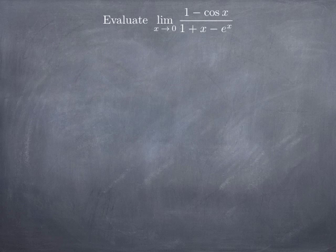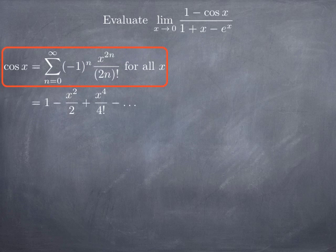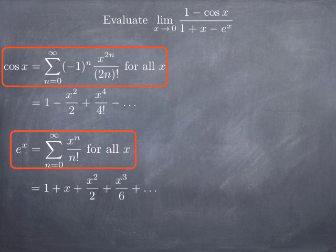The third example: evaluate the limit as x goes to 0 of (1 minus cos(x)) divided by (1 + x minus eˣ). As x goes to 0, cos(x) goes to 1 so the top goes to 0, and eˣ goes to e⁰ = 1 so the bottom also goes to 0. We use the power series for cos(x): 1 minus x²/2 + x⁴/4! minus x⁶/6! and so on, and for eˣ: 1 + x + x²/2 + x³/6 + x⁴/4! and so on.